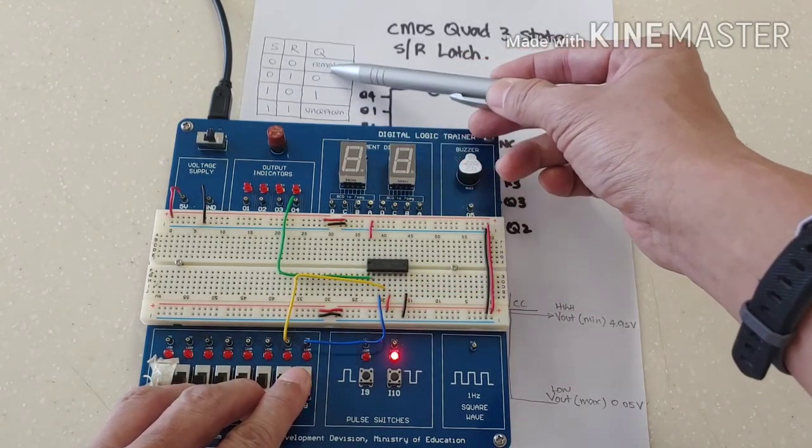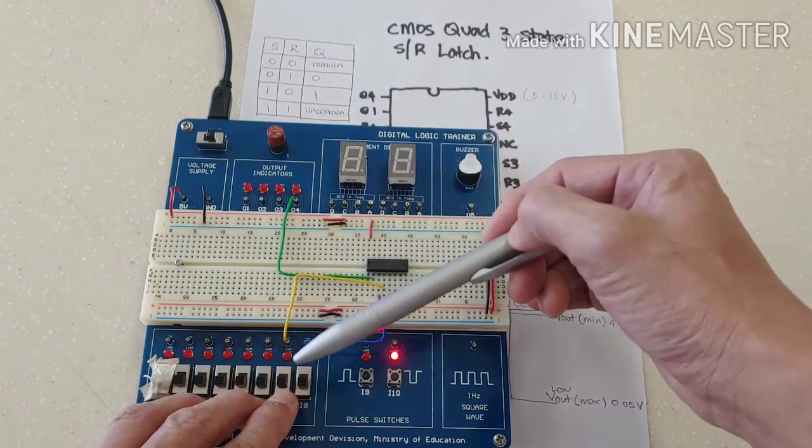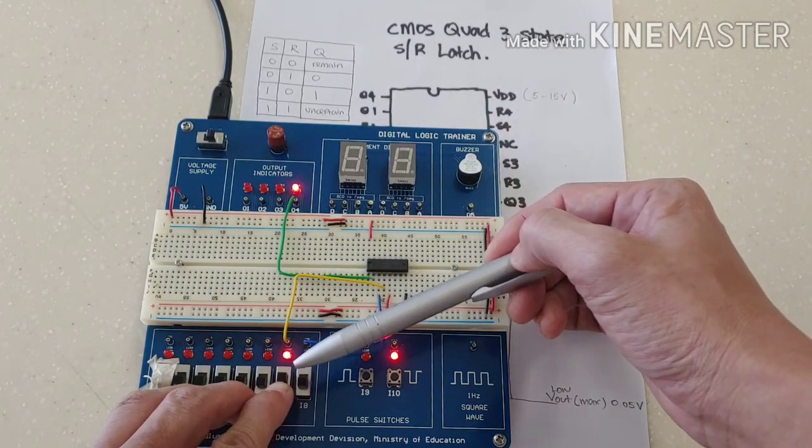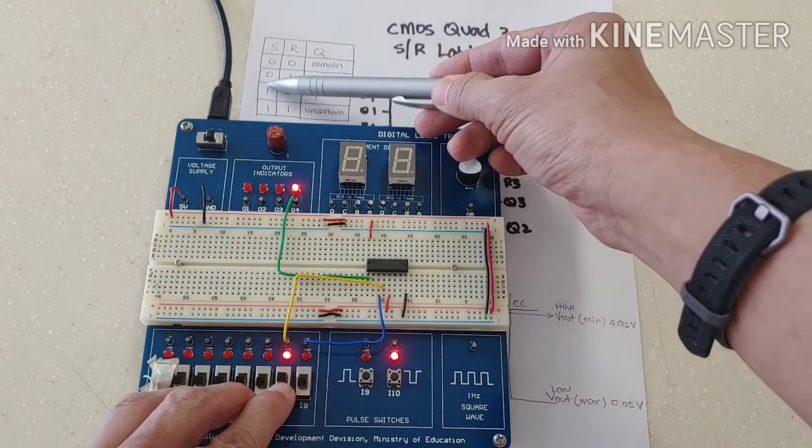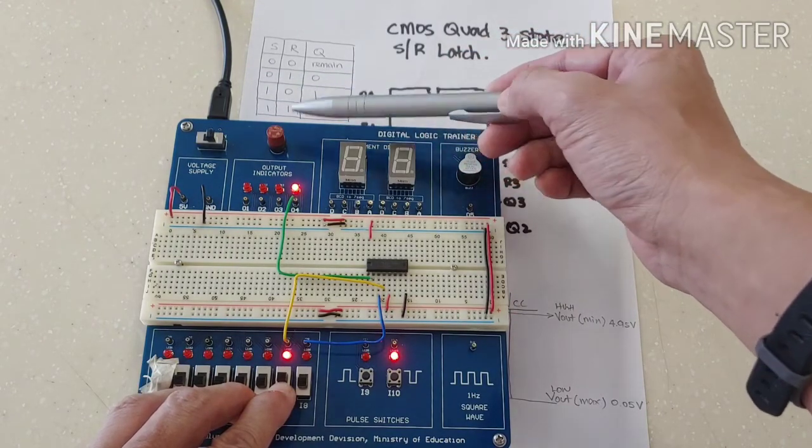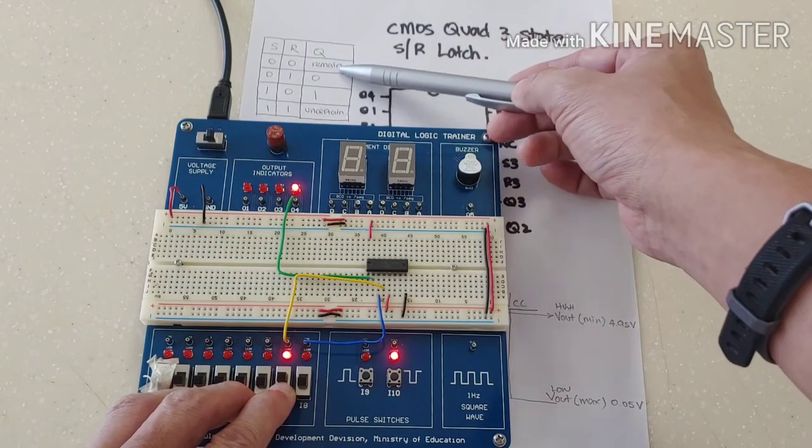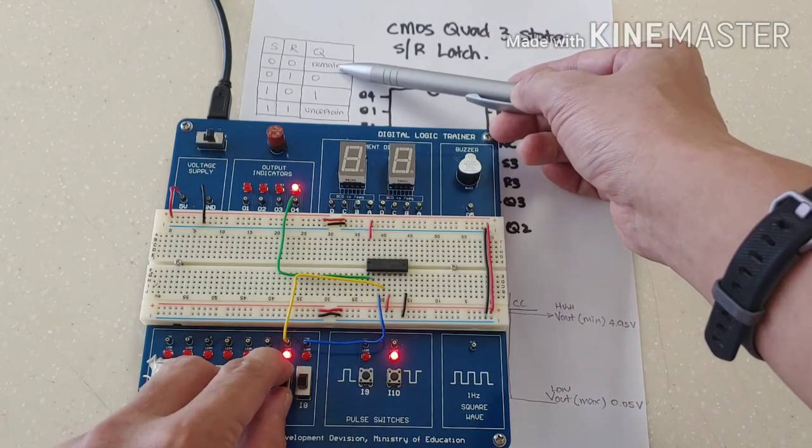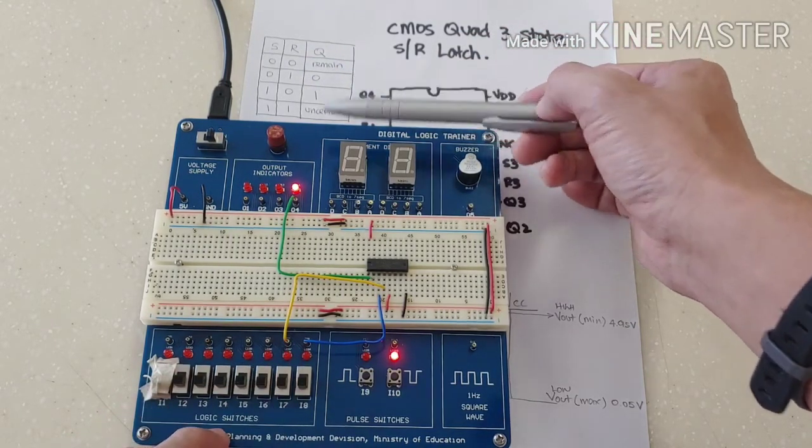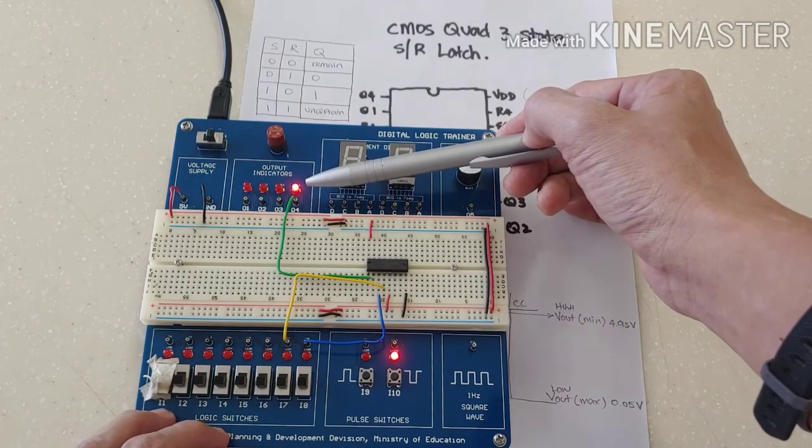So 0, 0, it remains at low. I am going to put it to set 1. Set 1, output is 1. Now I am going to bring it down to 0, 0, and it will remain at the previous state. It remains at high.